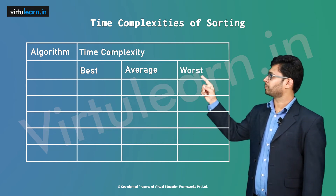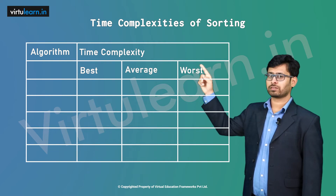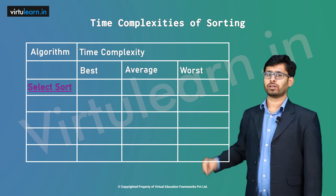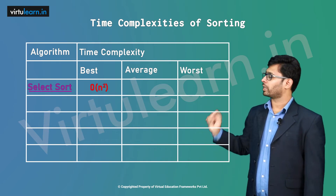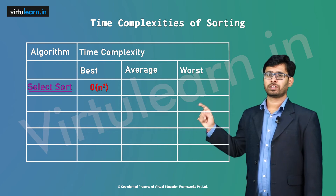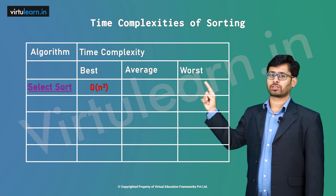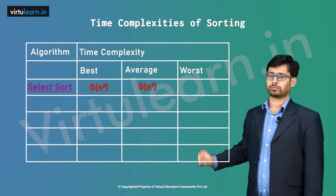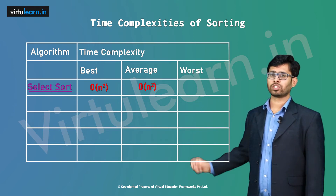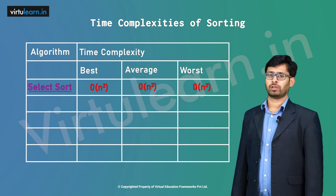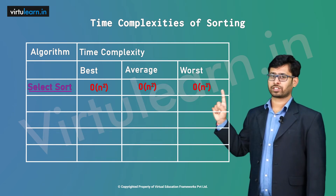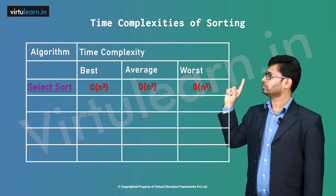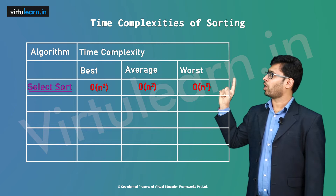The first algorithm is selection sort. For selection sort, the best case is O(n²), the average case is O(n²), and the worst case is O(n²). So for selection sort, best case, average case, and worst case are all O(n²).